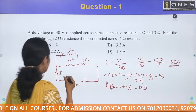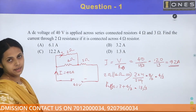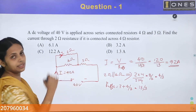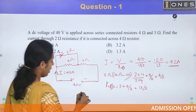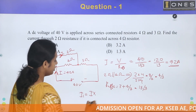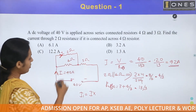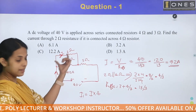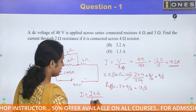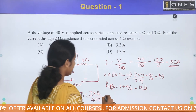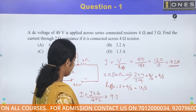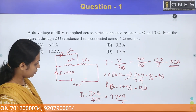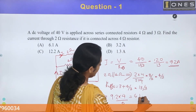Now we calculate the current through the 2 ohm resistance using the current division rule. I1 equals the net current I multiplied by the opposite resistance (4 ohm) divided by the total parallel resistance (4 + 2 = 6). So I1 = 9.2 × 4 / 6, which gives approximately 6.1 amperes.